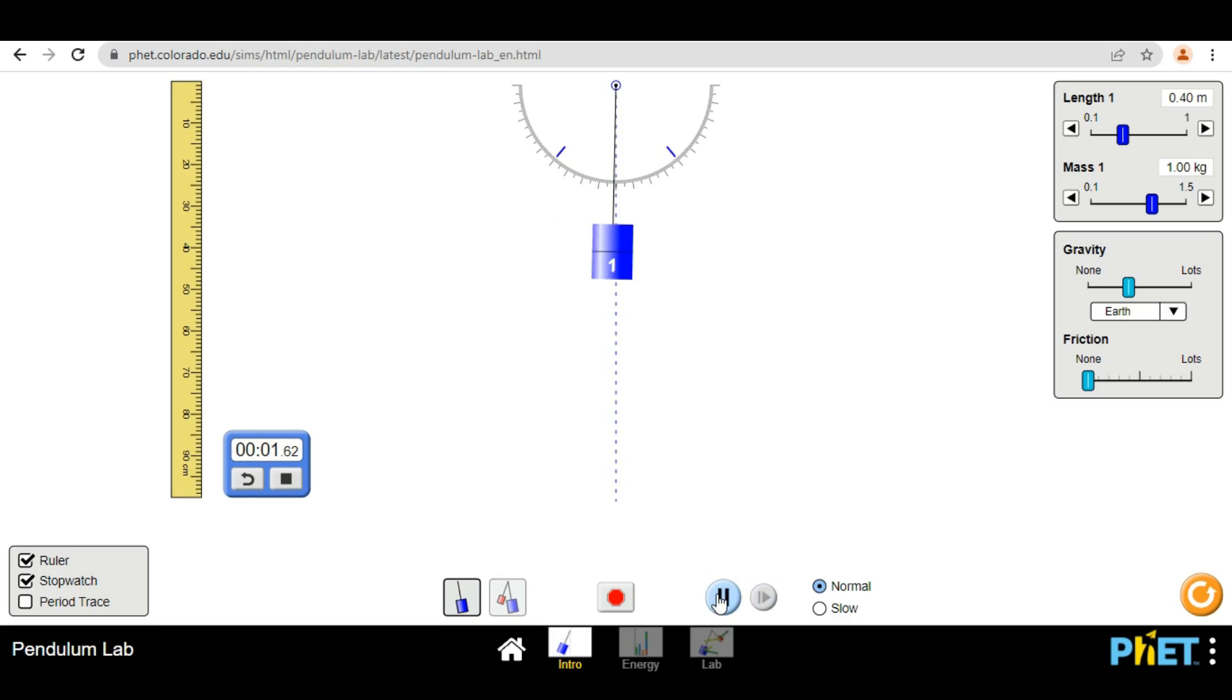Everything is ready to go. I have a stopwatch, I have the length set to 0.4 meter and I have the pendulum rotated. Go. 1, 2, 3, 4, 5, 6, 7, 8, 9, 10. The time period taken for 10 oscillations is 13 seconds. Time period taken for 1 oscillation will be 13 divided by 10 which is 1.3 seconds. When the length of the thread was 0.4 meter, I got the time period as 1.3 seconds.